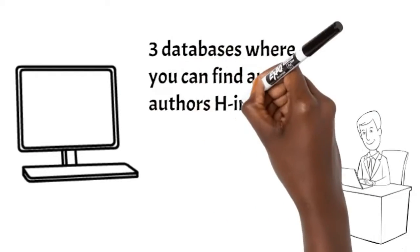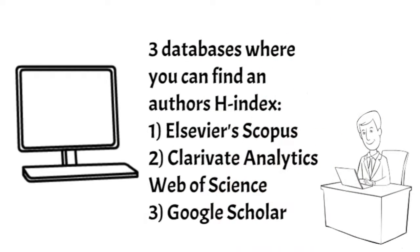I'm going to give you three databases where you can find an author's H-Index. The first is Elsevier's Scopus. The second is Clarivate Analytics Web of Science. And the final one is Google Scholar. I bet you want to run off and look at your H-Index right now — let's do that together right after this short intro.